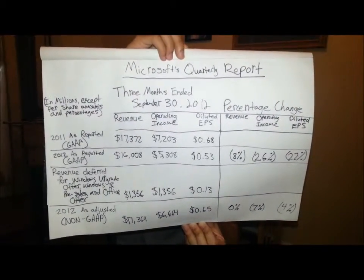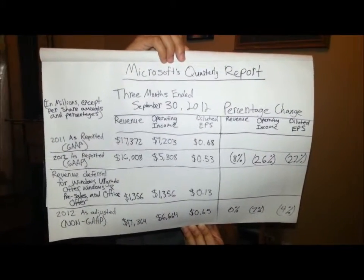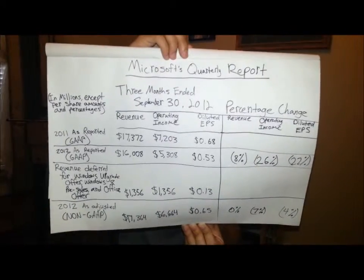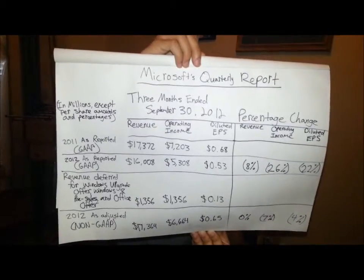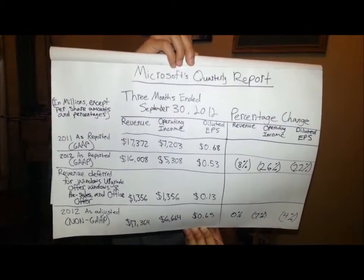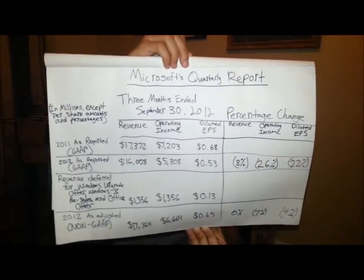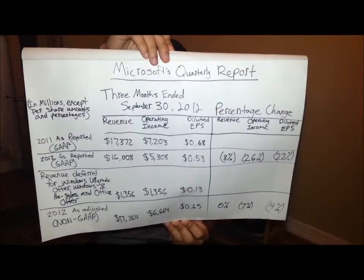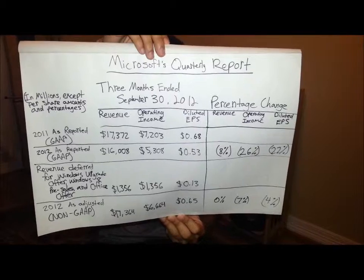2012 as adjusted non-GAAP consists of revenue being $17,364 million, $16,664 million operating income, and $0.65 diluted EPS. For the percentage change, revenue is 0%, operating income is negative 7%, and diluted EPS is negative 4%. The Server and Tools business reported $4.55 billion in first quarter revenue.